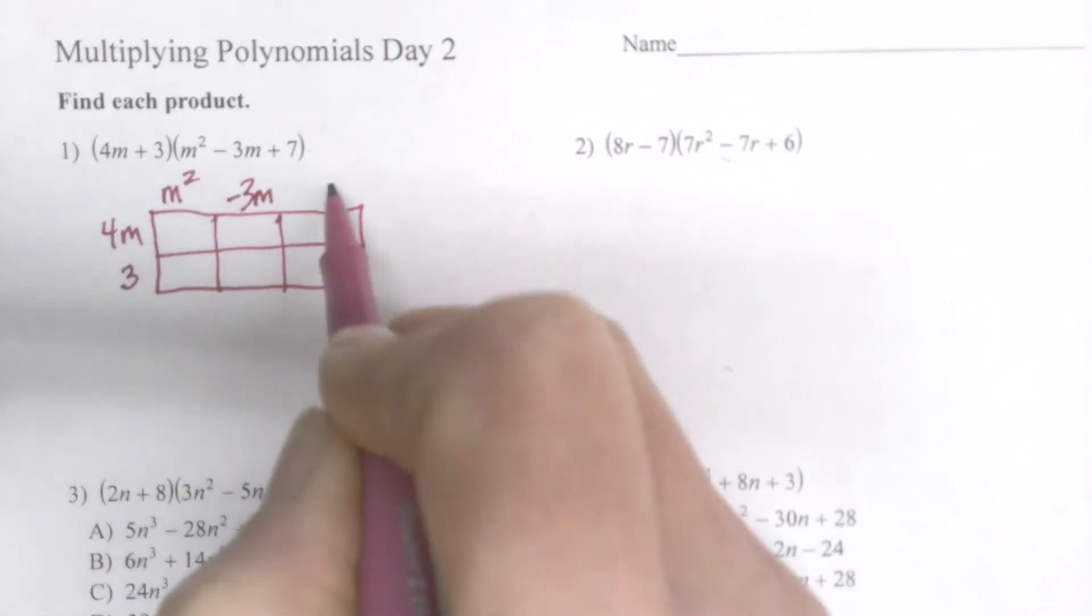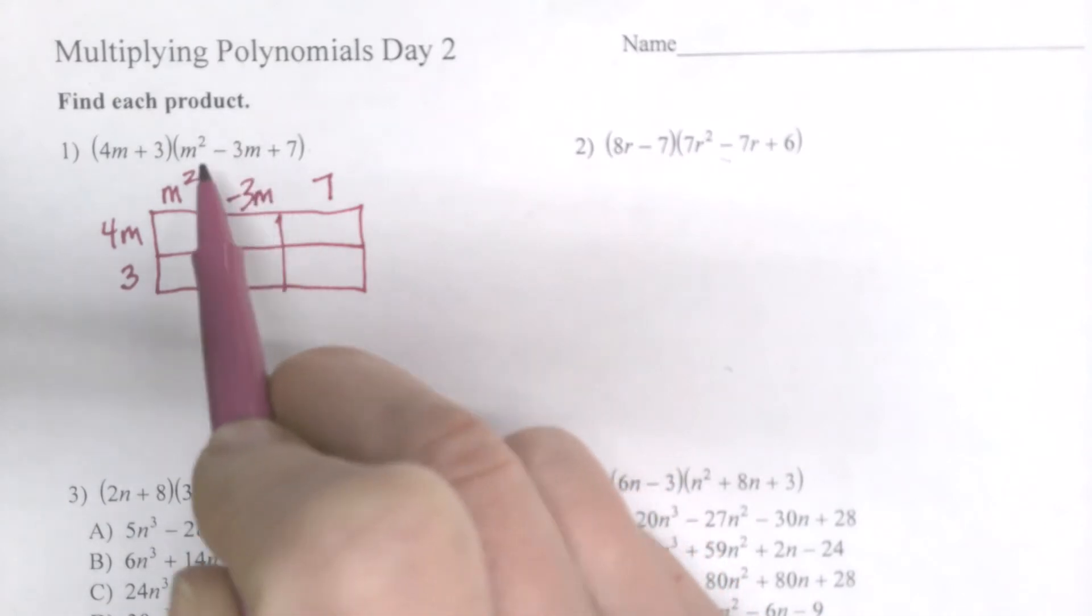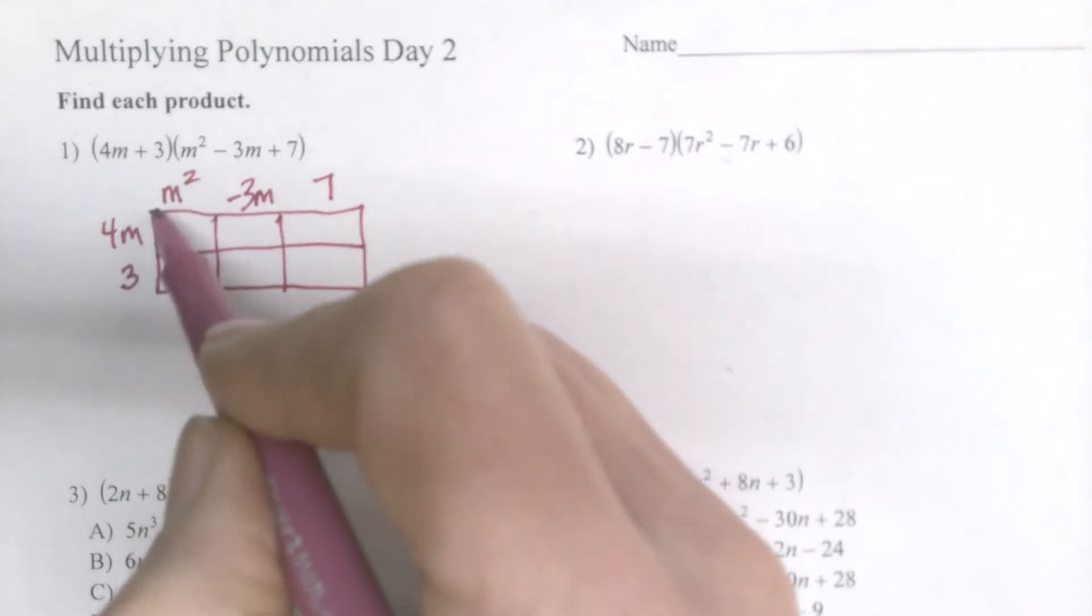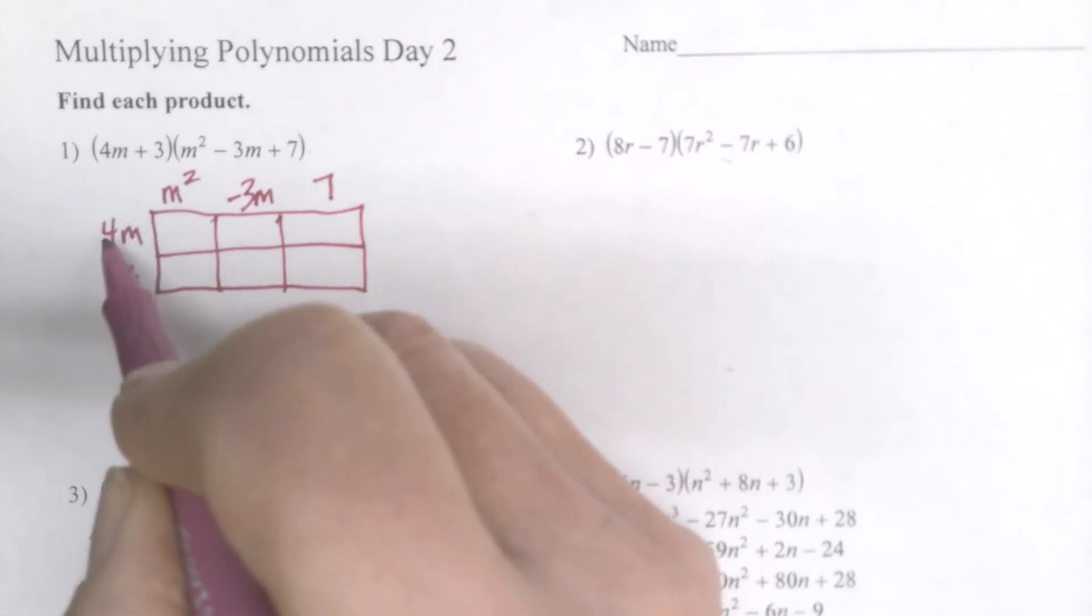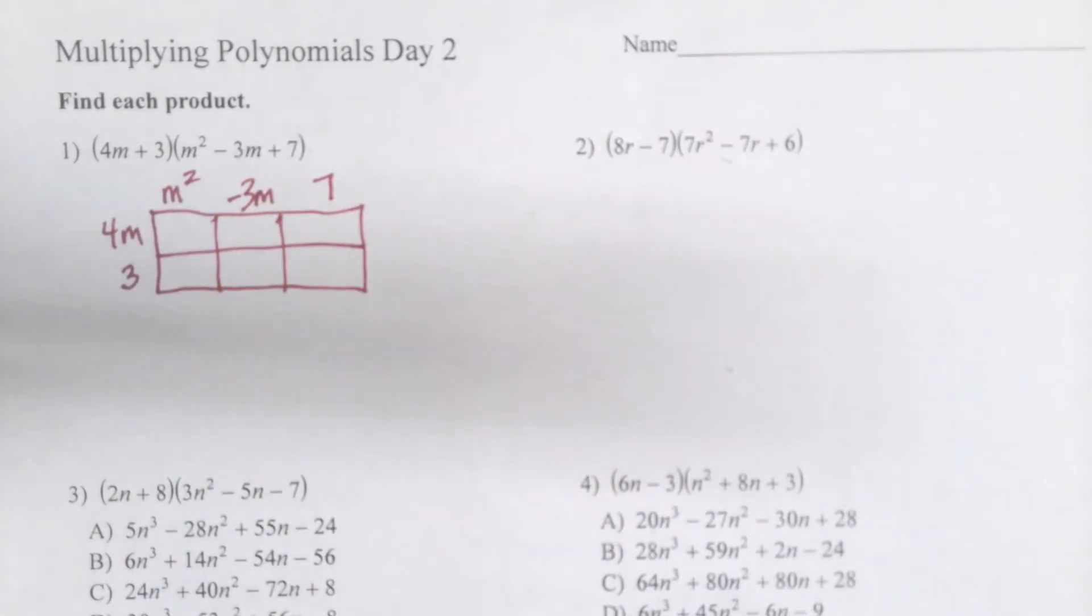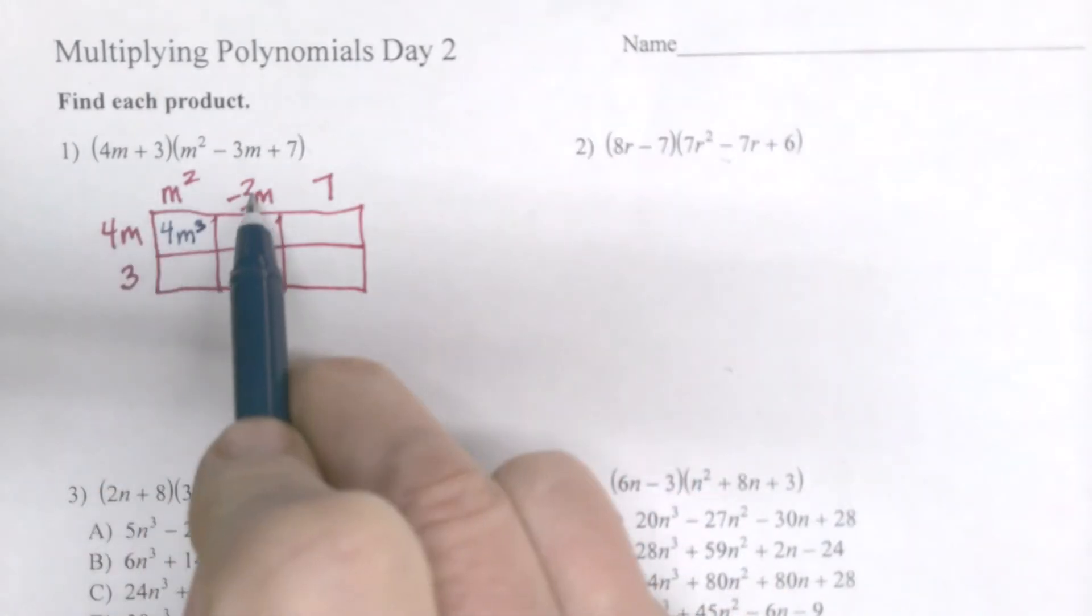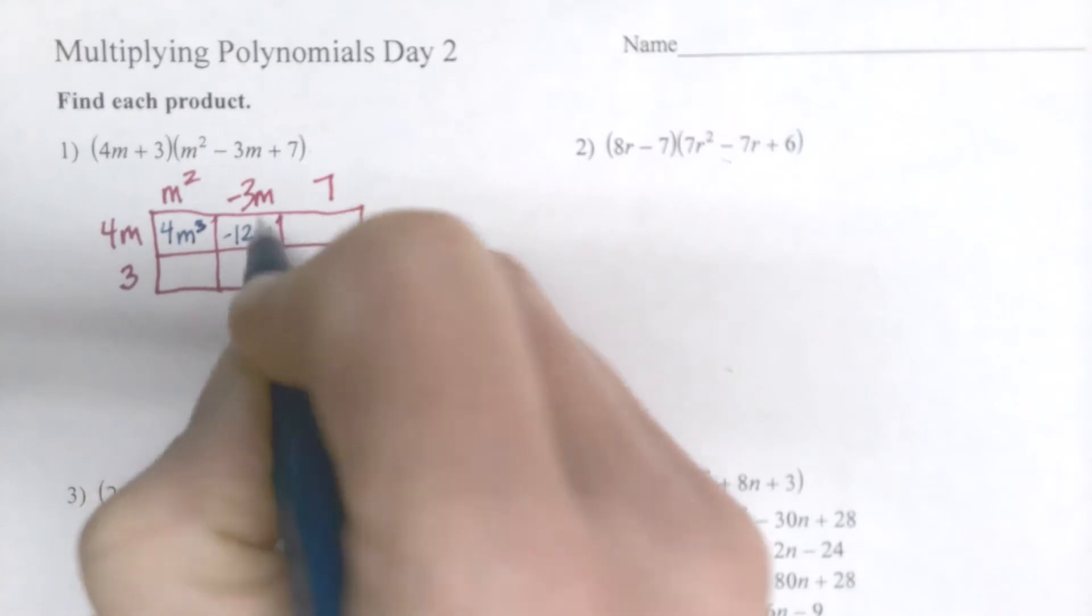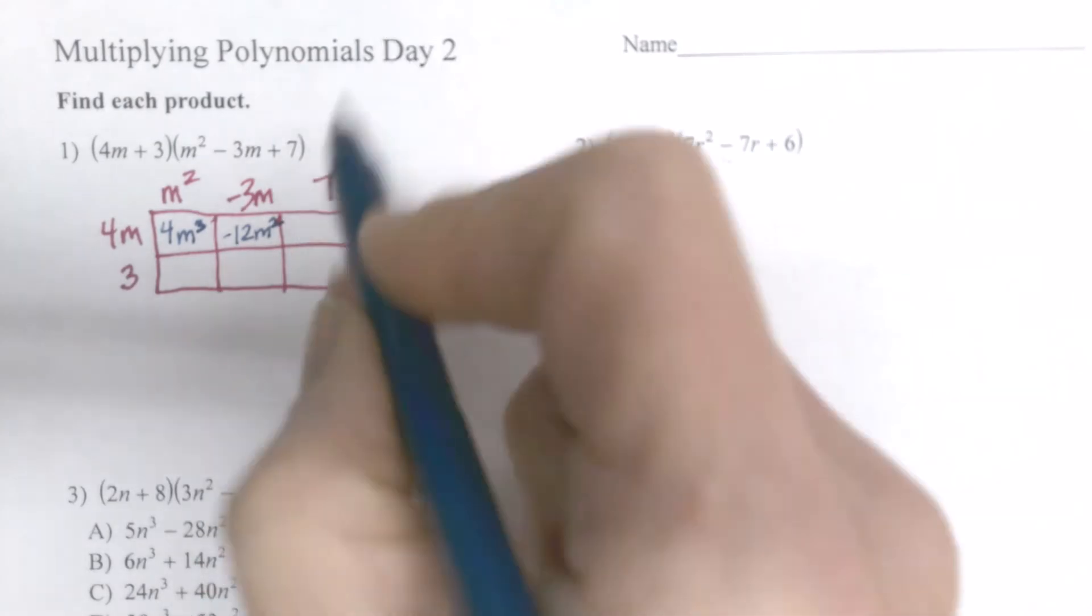Remember, when you learned that yesterday, that that minus gets treated like a negative. And what I'm going to do is I just multiply the base and height, almost like finding the area. So I would do 4m times m squared, that would give me 4m cubed, and then 4m times negative 3m, that's negative 12m squared, and then 4m times 7, 28m.